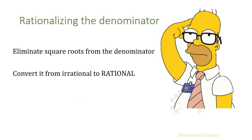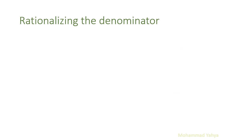Rationalizing the denominator — what does that mean? It means to eliminate the square root from the denominator: to convert it from irrational to rational. When we have a square root in the denominator it is irrational, so we rationalize it — we transform it into a rational number. Let's rationalize the denominator of the following examples. For 2 over radical 3, we need to eliminate the radical from the denominator.